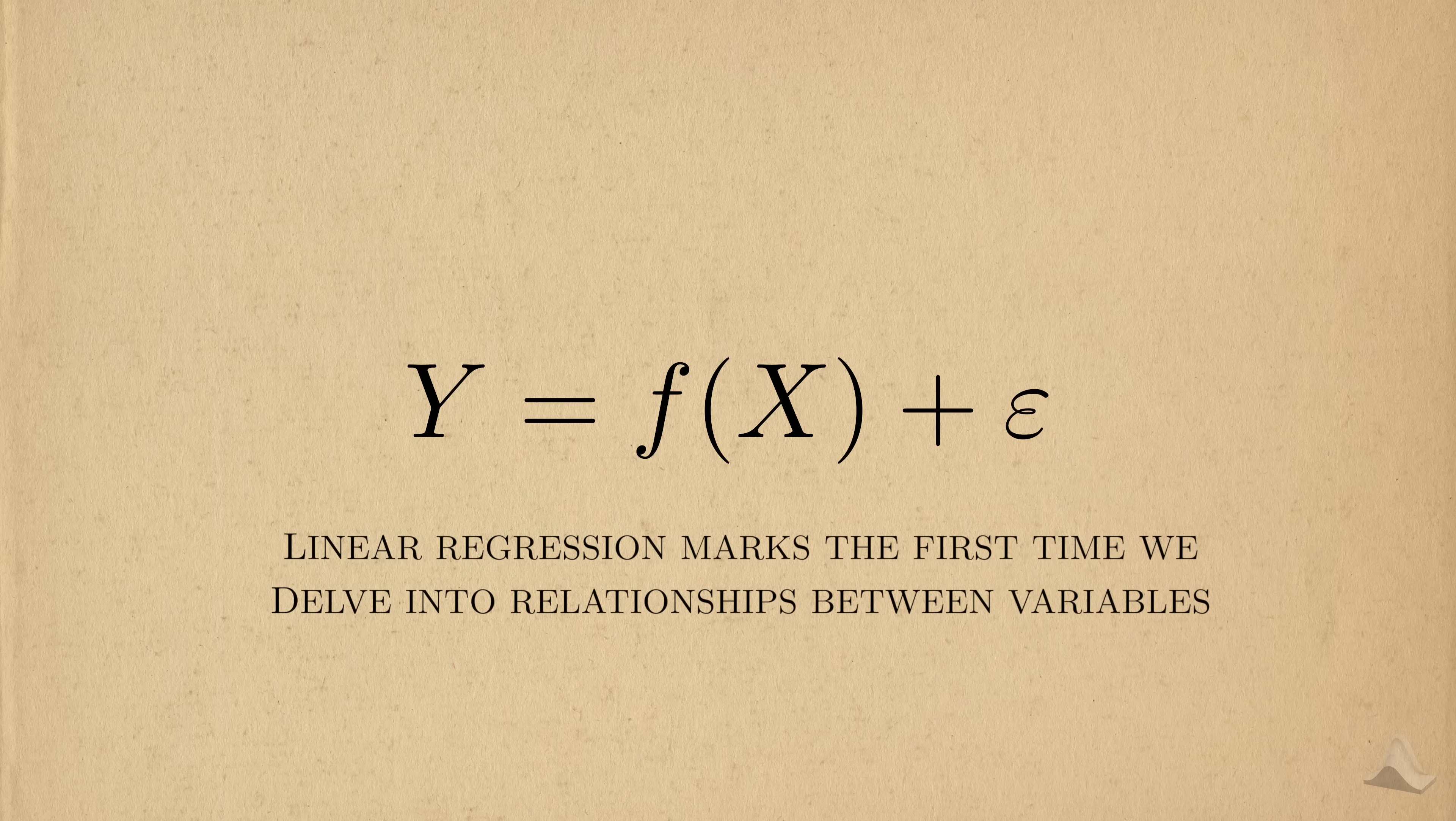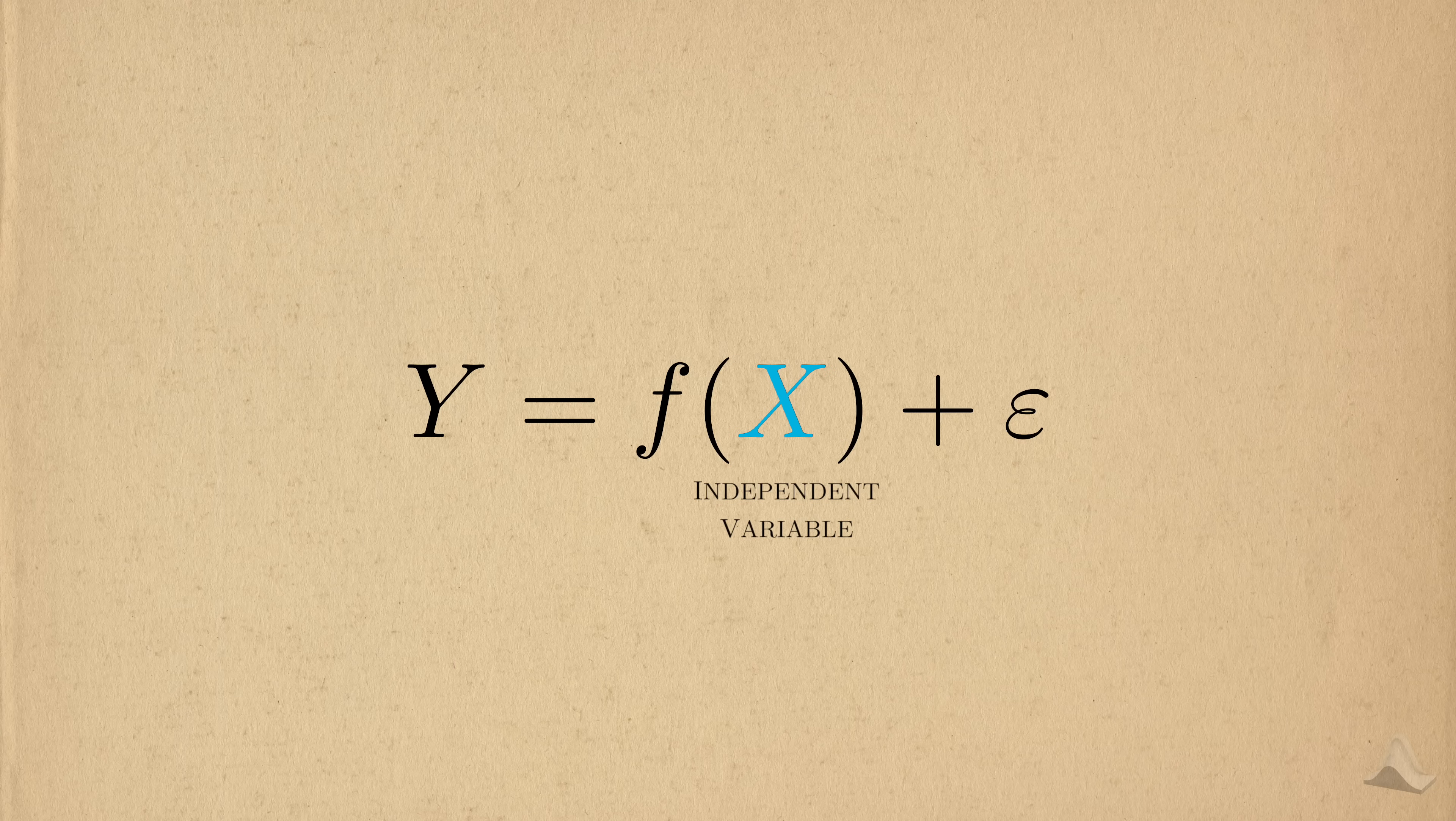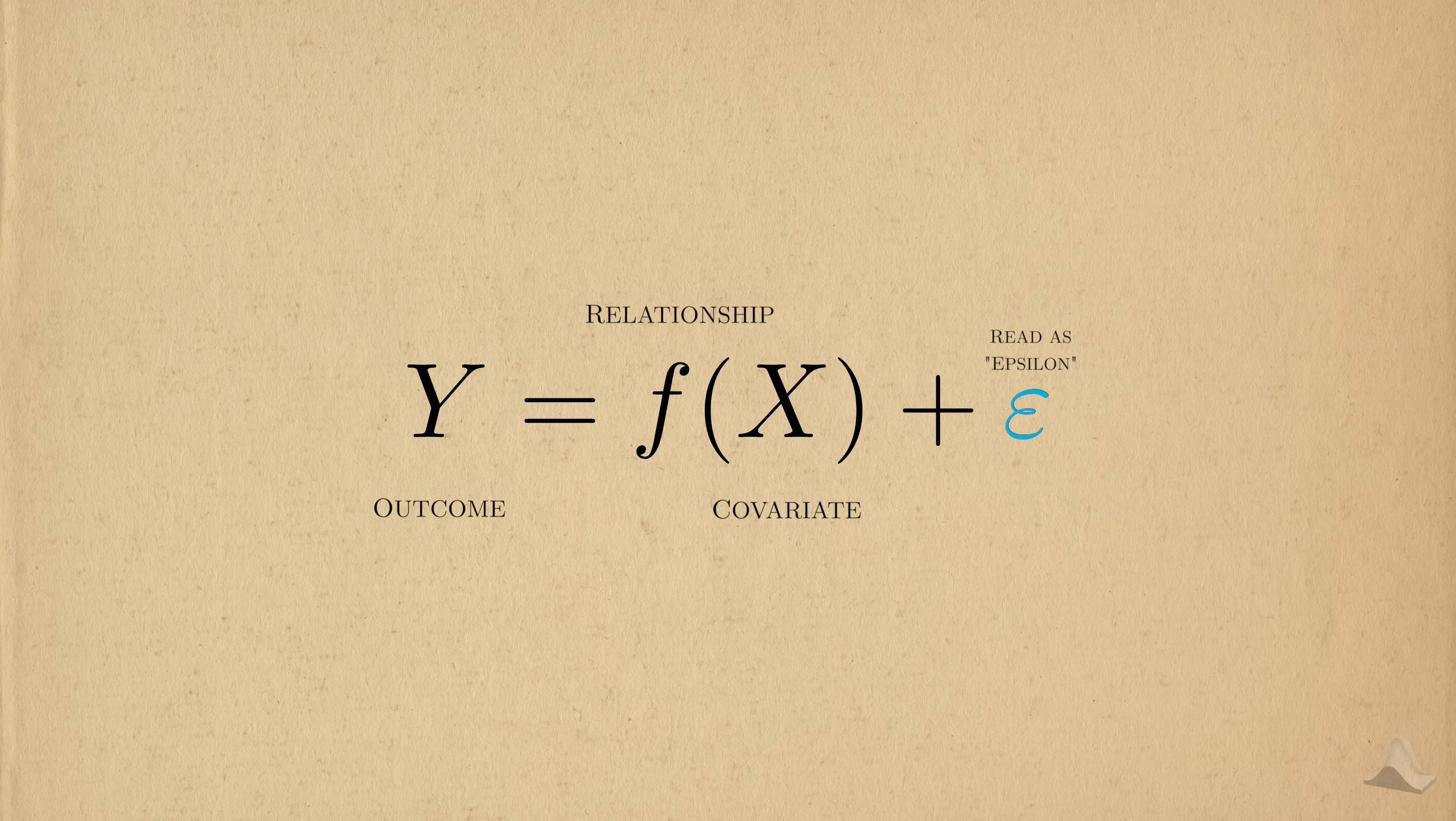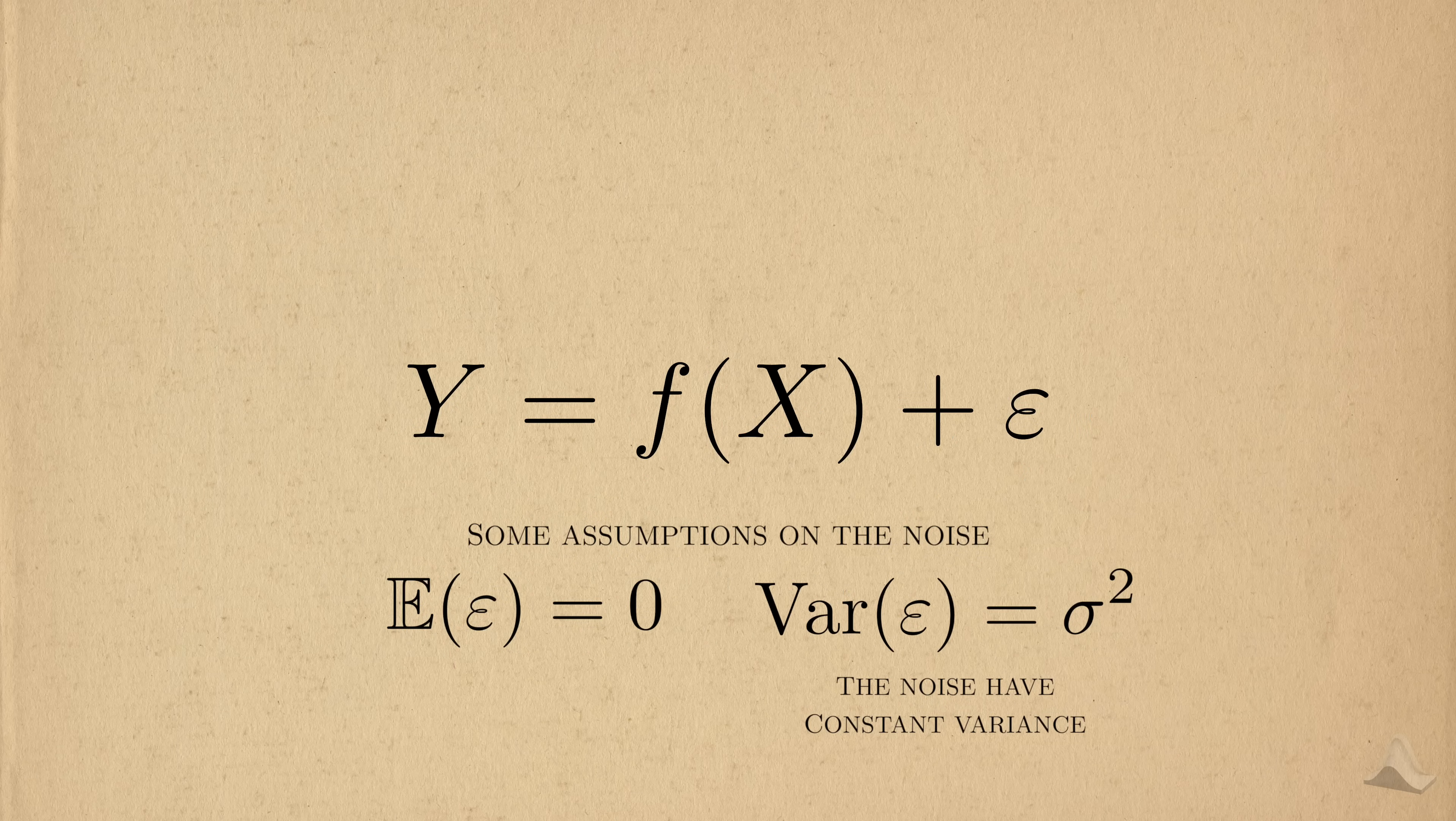Linear regression represents the first time that we delve into relationships between variables. Okay, technically it's the second, but it's the first time we're dealing with an explicit relationship like this. Here we have some independent variable x, and we're interested in its relationship f with some dependent variable y. These two variables have a lot of names, so I'm just going to stick to covariate and outcome respectively. This variable denoted by epsilon represents random noise. The only thing we'll assume about the noise is that their expected value is zero, meaning that their general magnitude and direction generally cancel each other out when considered in aggregate, and that they have some constant variance.